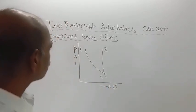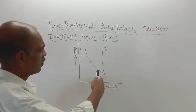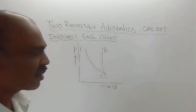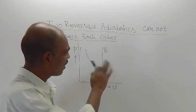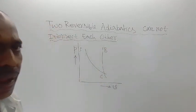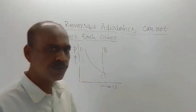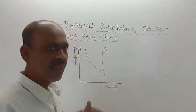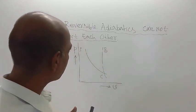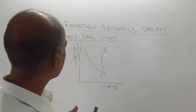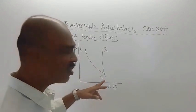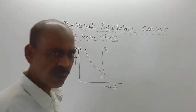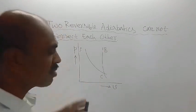We have drawn two reversible adiabatics: AC, this is one reversible adiabatic, and BC, that is another reversible adiabatic. We have assumed that these two reversible adiabatics have a point of intersection at point C. The point C is the point of intersection.